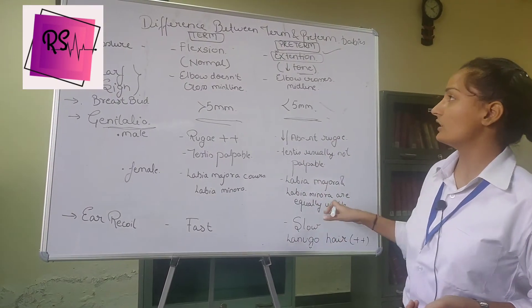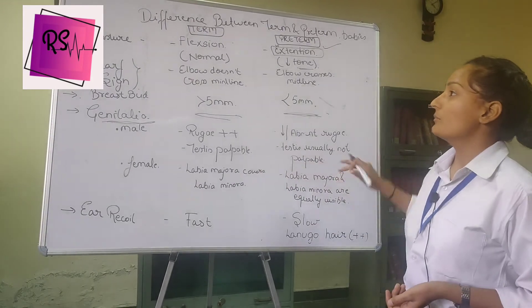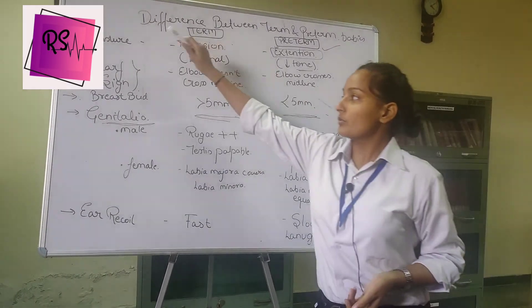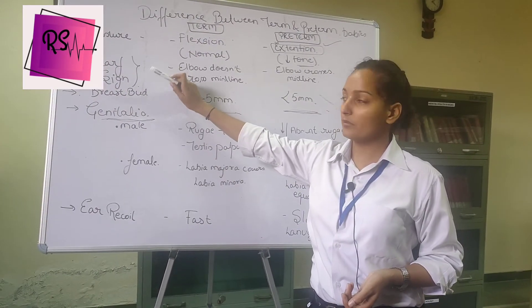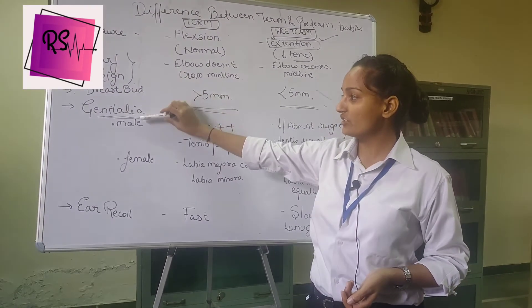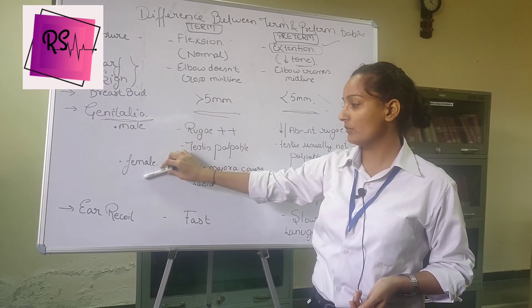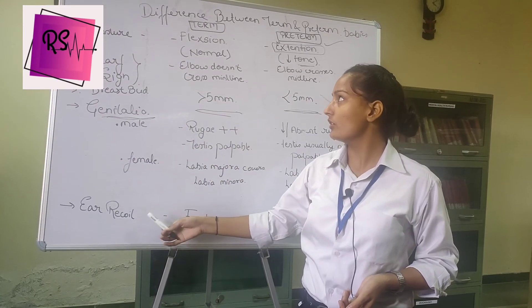So those are the differences between the term and the preterm baby: posture, scarf sign, breast bud, genitalia — both male and female — and ear recoil.